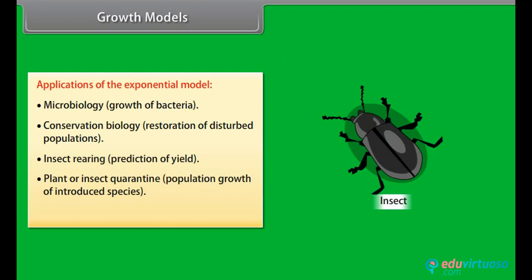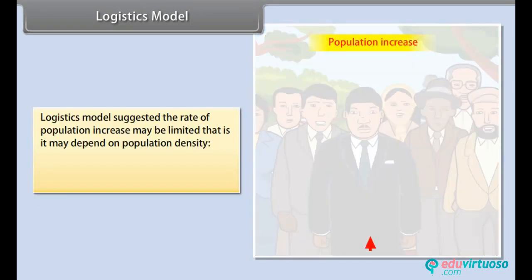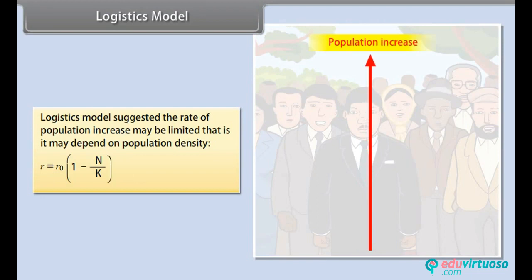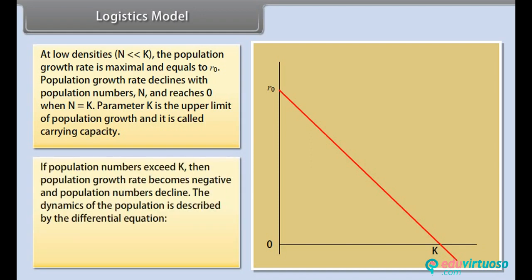Logistics model: The logistics model suggests that the rate of population increase may be limited and depends on population density: R = R0 × (1 − N/K). At low densities where N is much less than K, the population growth rate is maximum and equals R0. Population growth rate declines with population numbers N and reaches 0 when N equals K. Parameter K is the upper limit of population growth called carrying capacity. If population numbers exceed K, the growth rate becomes negative and population numbers decline. The dynamics are described by the differential equation dN/dT = R0 × N × (1 − N/K).